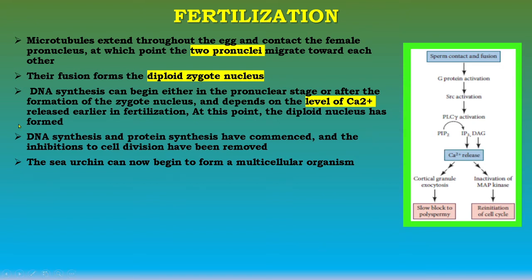This covers all the events of fertilization in the sea urchin egg, which is external type fertilization occurring in sea water. This is part one of the topic. In the next lecture, we will discuss the example of mammals — that is, all the events occurring in mammalian fertilization. Thank you very much.